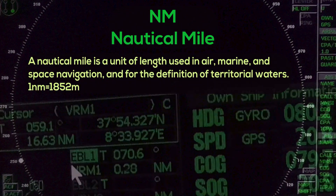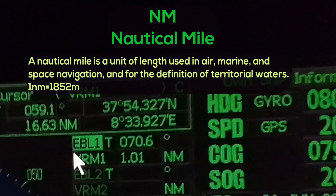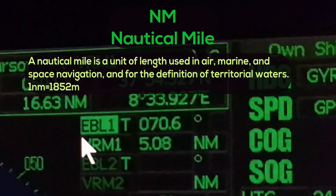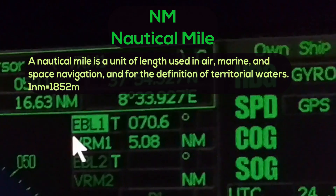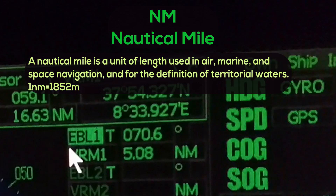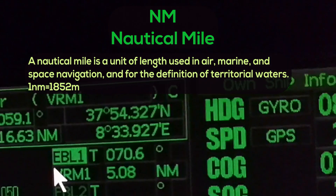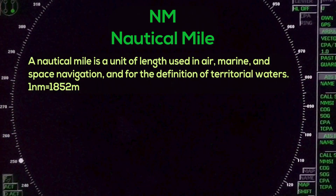Nautical Mile: a nautical mile is a unit of length used in air, marine, and space navigation, and for the definition of territorial waters. One nautical mile equals 1852 meters.